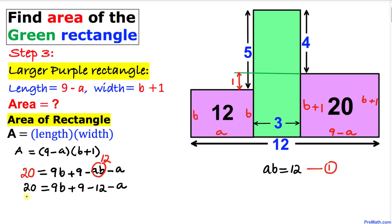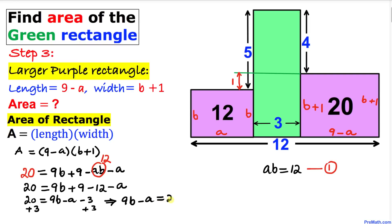After substituting and simplifying, we get 20 equals 9b minus a minus 3. Adding 3 to both sides gives us 9b minus a equals 23.